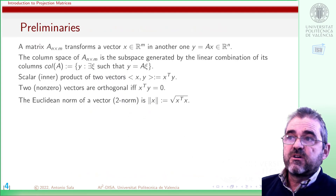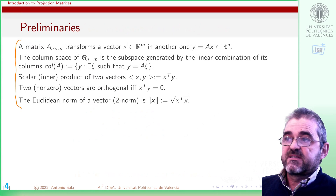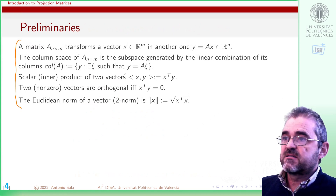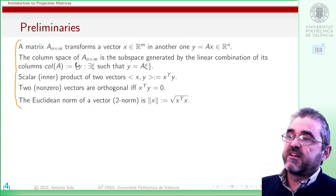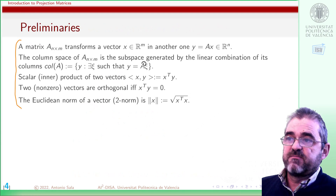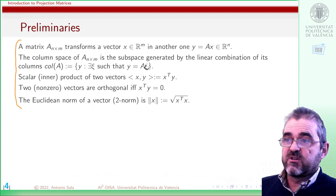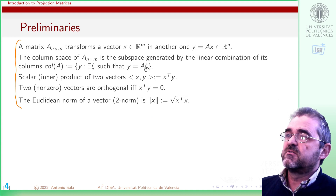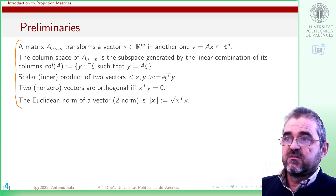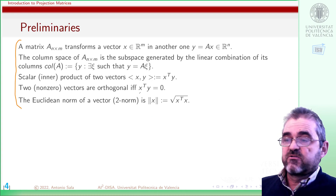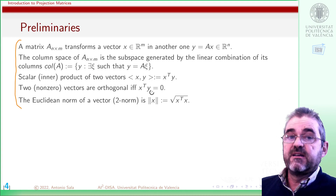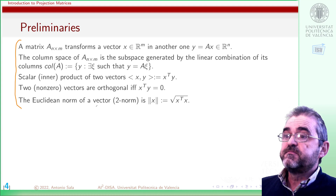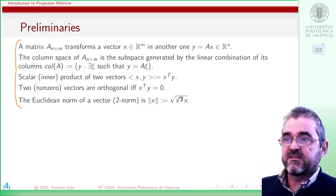We will first recall some preliminaries. The column space of a matrix is the set of vectors that can be expressed by the columns of A multiplied by some coefficients, which are the elements of the psi vector. The inner product of two column vectors is defined as usual. Two vectors are orthogonal if their inner product is zero, and the square root of the inner product of a vector with itself is the two-norm of that vector.